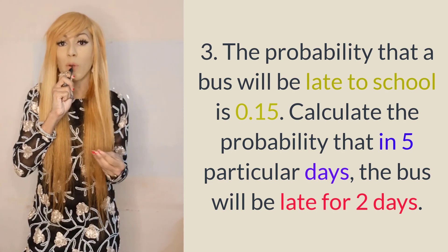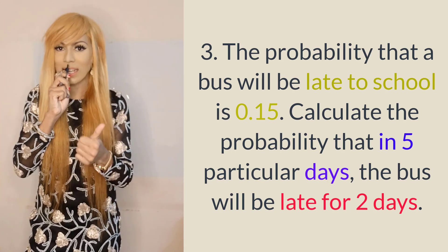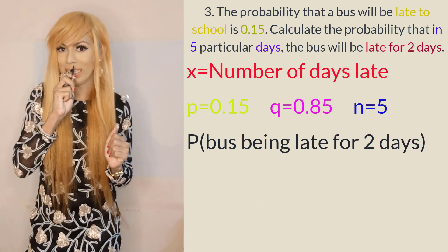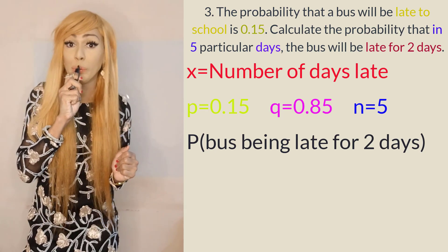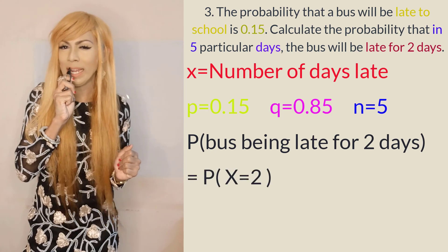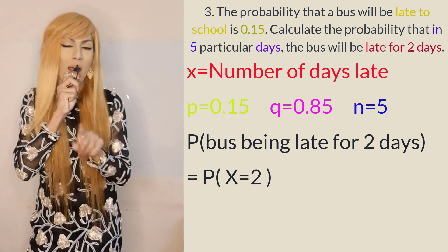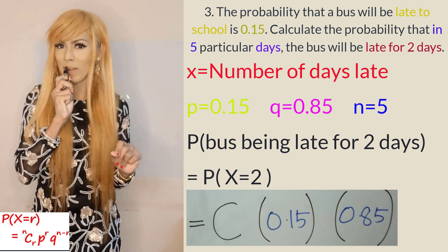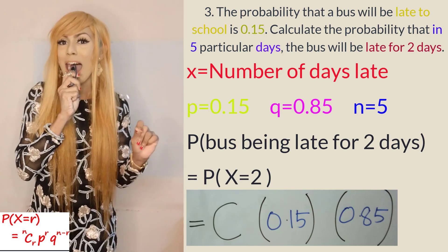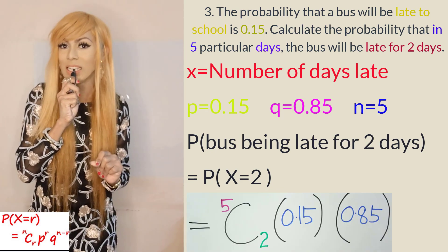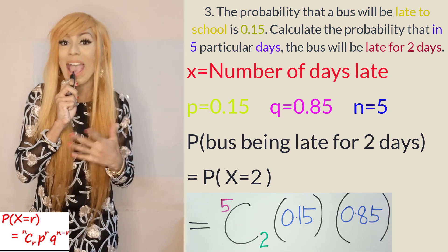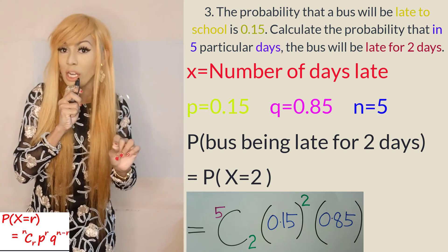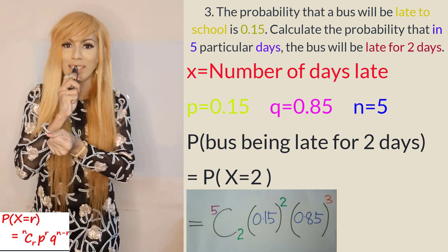We want the probability that the bus is late for 2 days, so X = 2. P(bus late for 2 days) = P(X = 2) = 5C2 × (0.15)^2 × (0.85)^(5−2) = 5C2 × (0.15)^2 × (0.85)^3. Calculate this in your calculator and you get 0.1382.